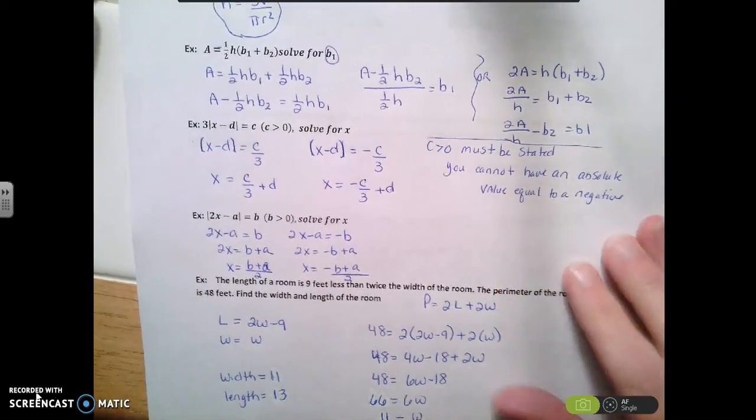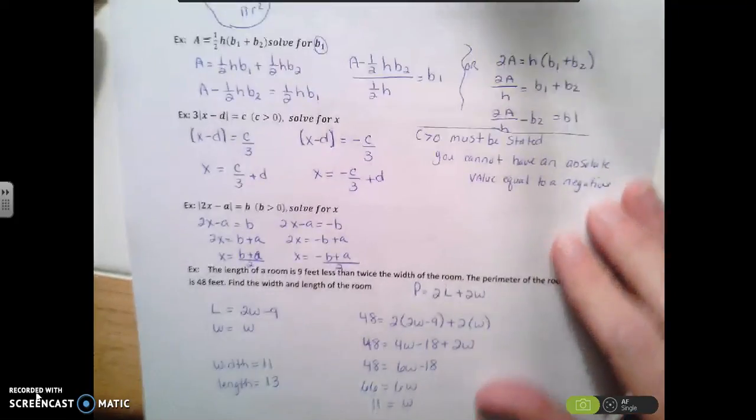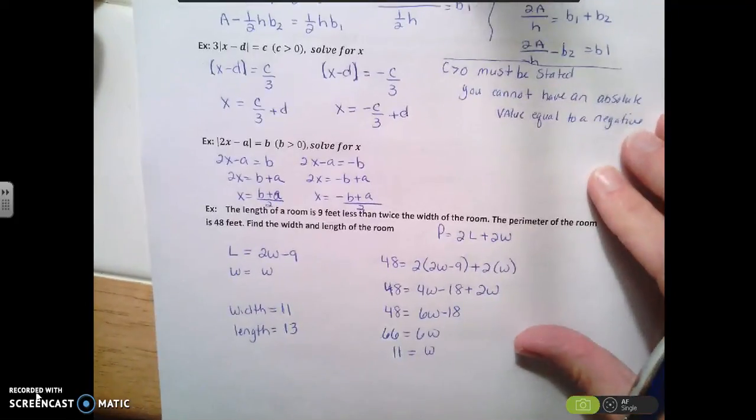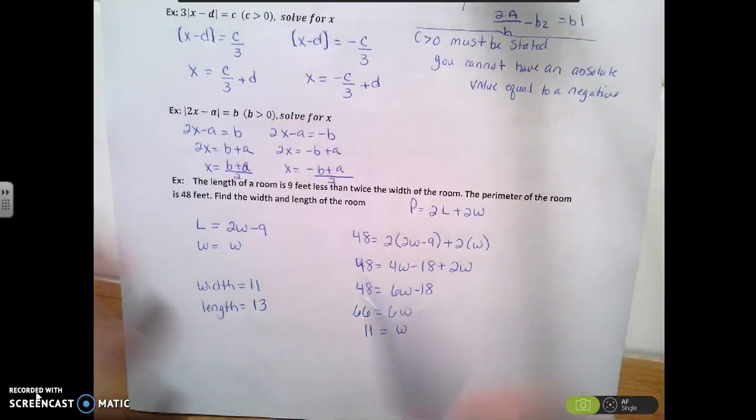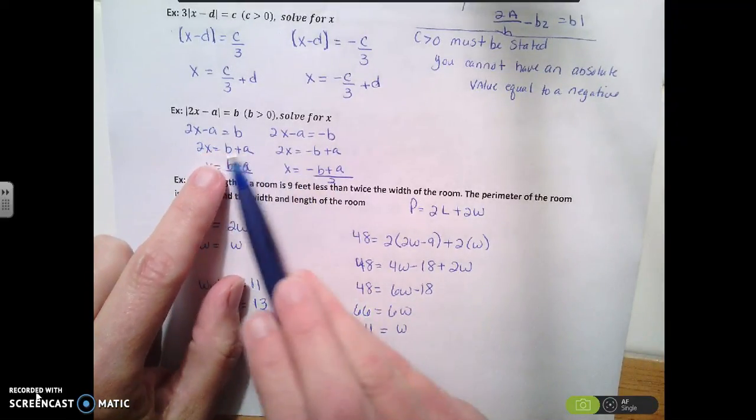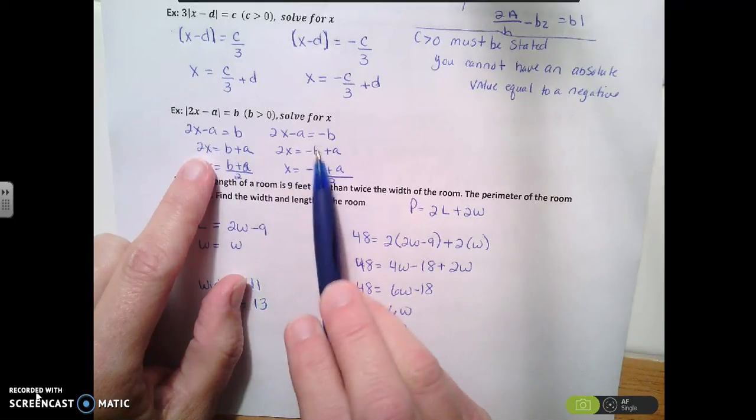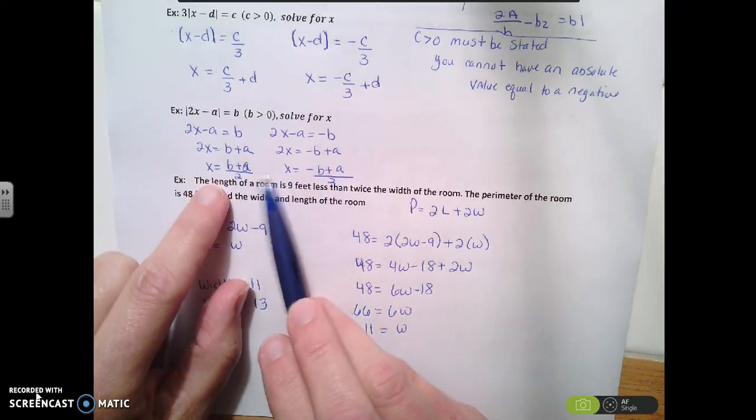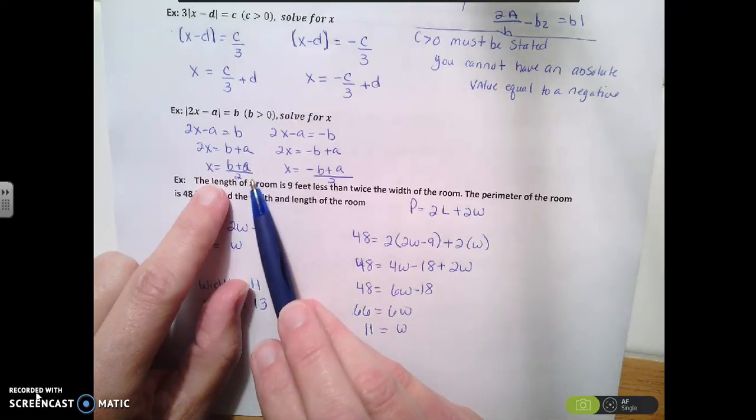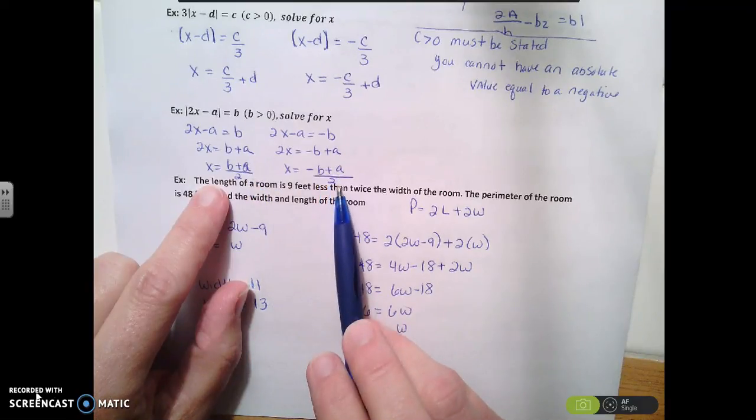So same thing here. I have this equation. I'm going to solve for x. So I'm going to put the negative b and the positive b. And then I'm going to add a to both sides, and I'm going to divide by 2. So I end up with b plus a divided by 2, and negative b plus a divided by 2.